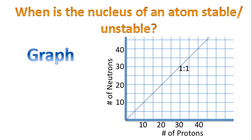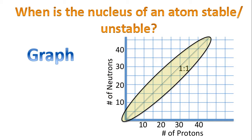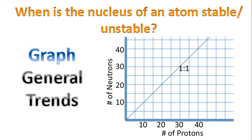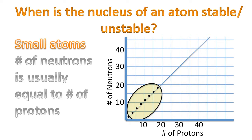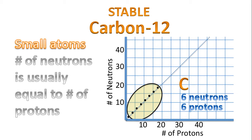We're going to use this graph to analyze when a nucleus is stable or unstable. Notice the x-axis — we're plotting the number of protons — and the y-axis, the number of neutrons. I've plotted this line, which represents a one-to-one ratio of neutrons to protons. For small atoms, usually the number of neutrons is equal to the number of protons, and this results in the atom being stable. For example, carbon-12 has six neutrons and six protons — this is stable. But carbon-14 is unstable; it has eight neutrons compared to only six protons. Carbon-10 is also unstable; it has four neutrons compared to six protons.